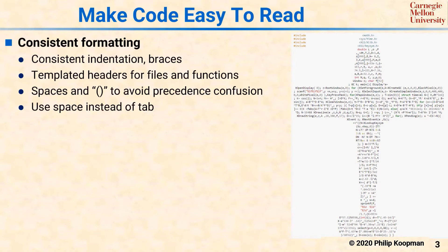Here's an example of code that intentionally did not follow good formatting rules. This is a program that implements a flight simulator from the obfuscated C contest. While writing flight simulator code in the shape of an airplane is cute, that's not how you want to do production code. In general, industry code tends to be in a better format than that, but there is no reason for you to have inconsistent spacing and formatting because you can get tools that clean it up for you automatically.